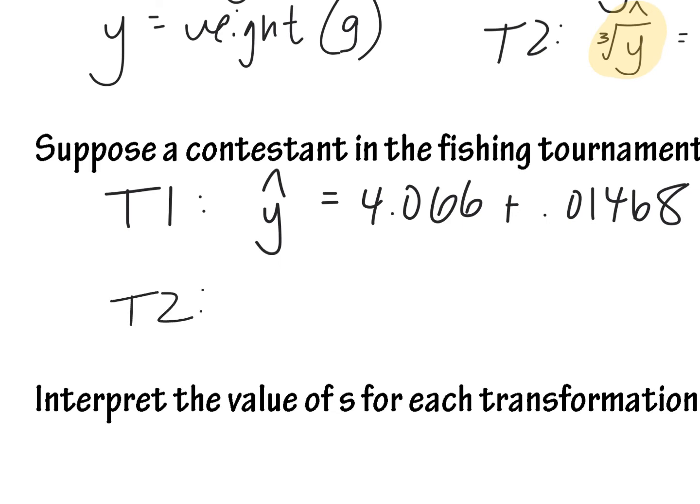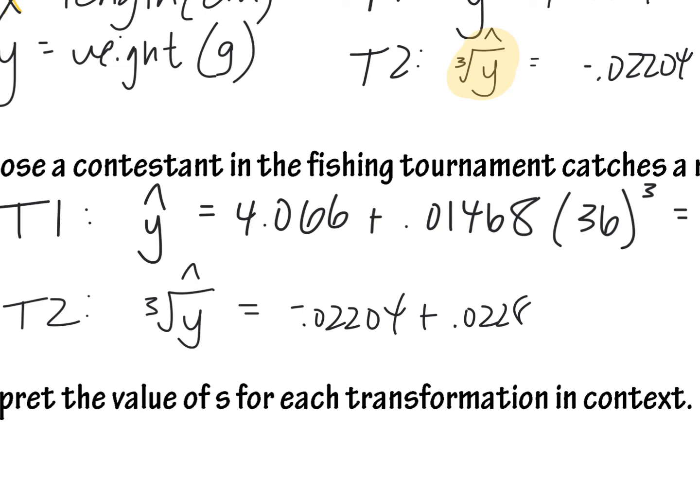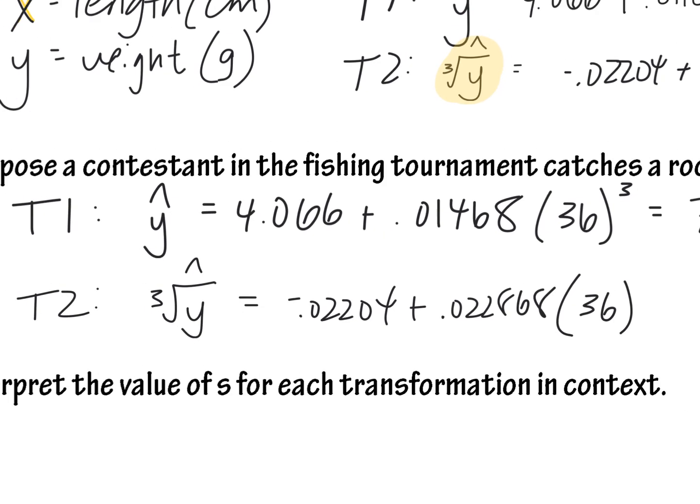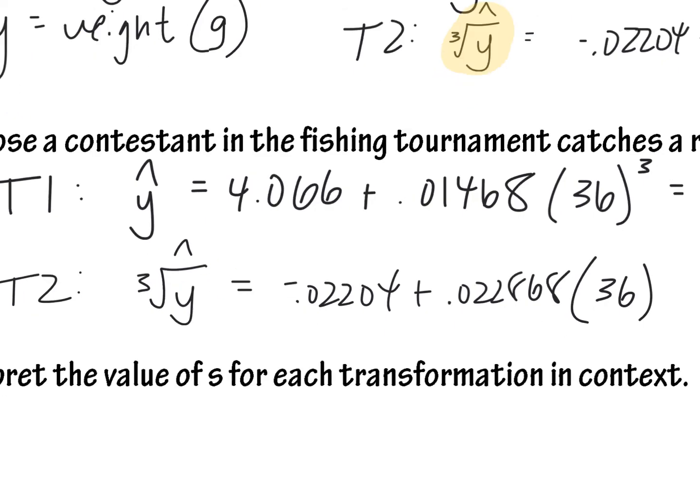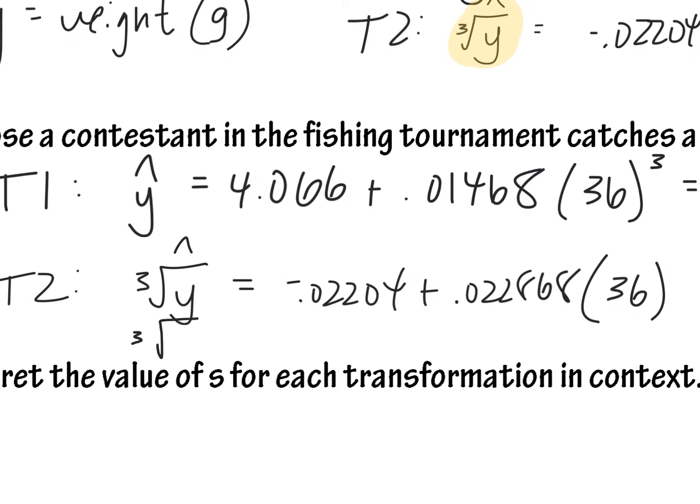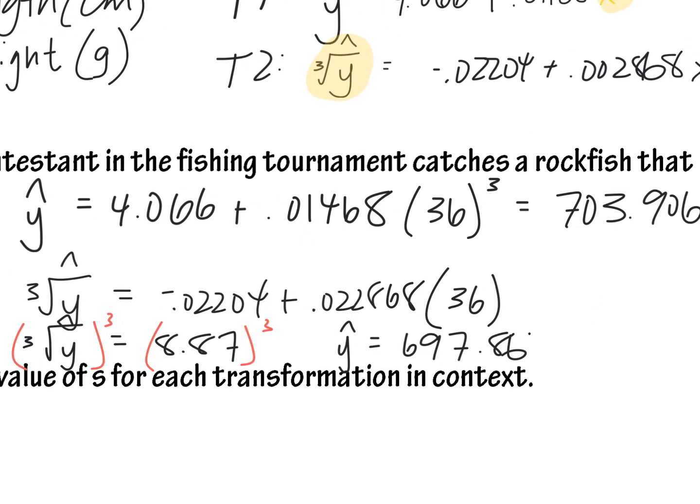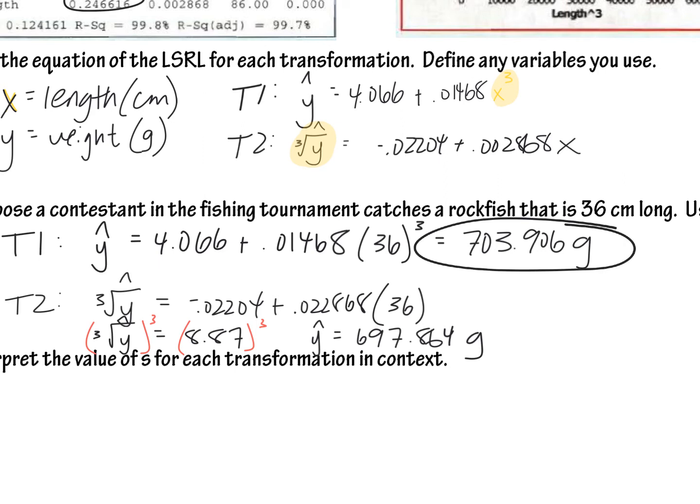I want to do the same thing for transformation 2. So transformation 2, I had a cube root of y, and that is negative 0.02204 plus 0.002868 times 36. Remember, it's regular x that I'm plugging in, but I cube rooted the y, so it's going to take a little tiny bit of algebra skills to solve this. So I have cube root of y hat equals 8.87. So how do I get y hat all by itself? I need to cube both sides. I'm just trying to figure out what y hat is, you guys. So we're doing a little bit of algebra. So that means that y hat is 697.864 grams. Look how close both of my answers ended up being.